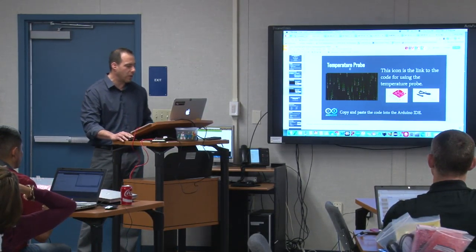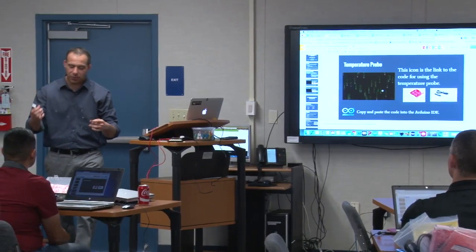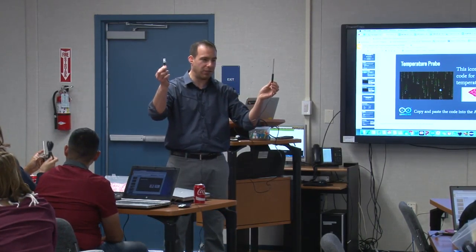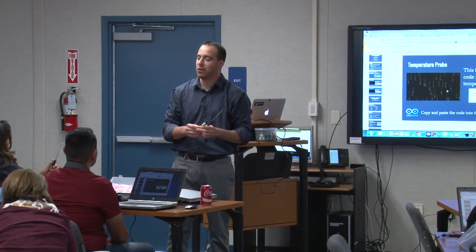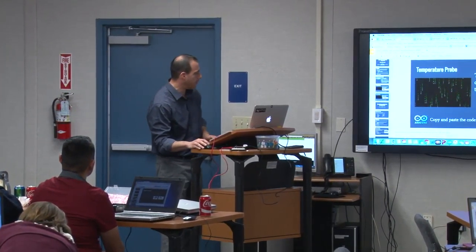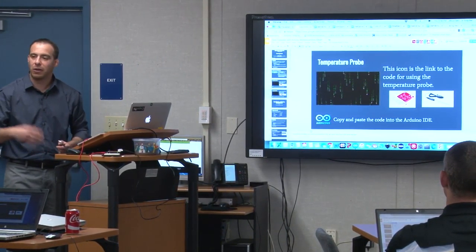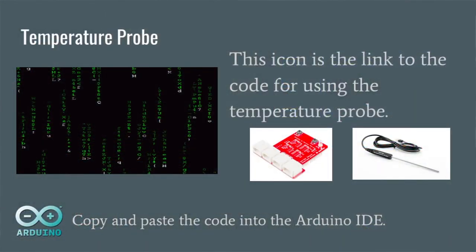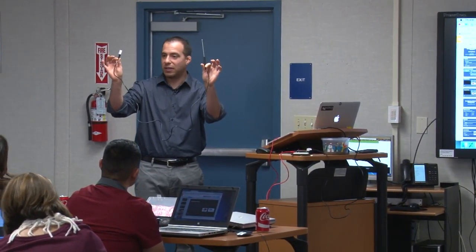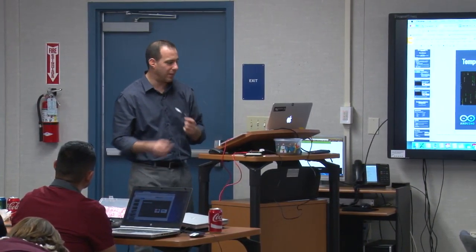There's also code for a temperature probe, but it was written for a different probe than what you have. You actually have the USB version, which is nice because you can plug it into a Chromebook and use Vernier's Graphical Analysis Chrome extension — I wrote the extension name in the presenter notes at the bottom of the slide. The analog sensor versions are much cheaper than the USB version — about $15 each along with your Redboard — so if you want to buy a classroom set, the code is provided and ready to go.